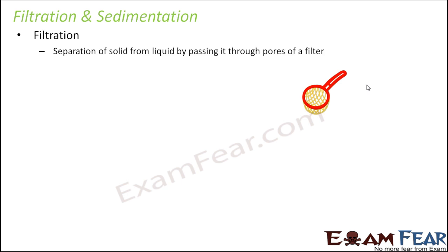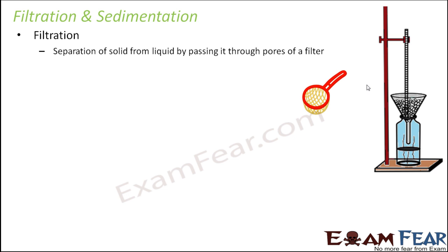In filtration, whenever some solid particles are present in a liquid we pass it through a filter. A filter has tiny pores that allow the liquid to pass through but do not allow the solid to pass through, and that is how we can separate the solid from the liquid. Think of the example when you prepare coffee — the solid part of the coffee remains over the sieve but the liquid part is poured down. So that is an example of filtration, and this concept is used throughout the process of sewage treatment.